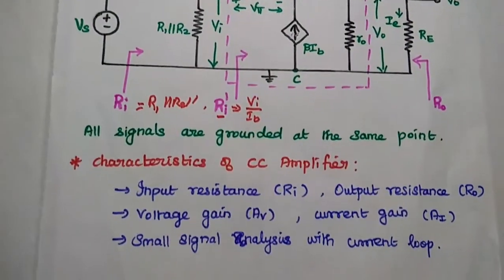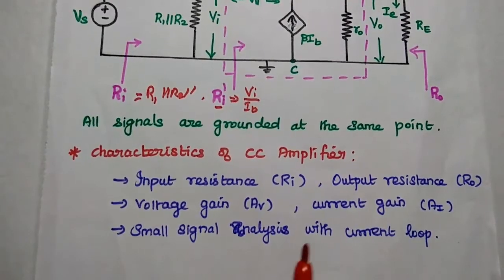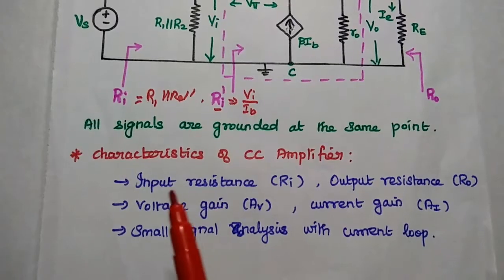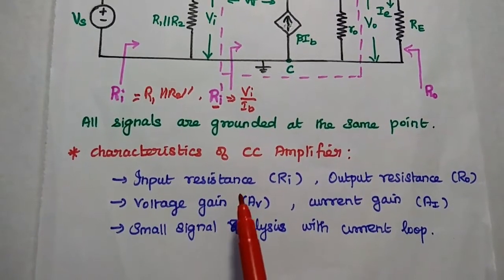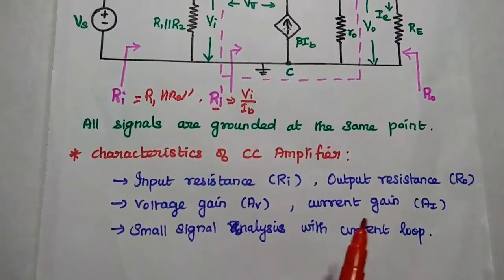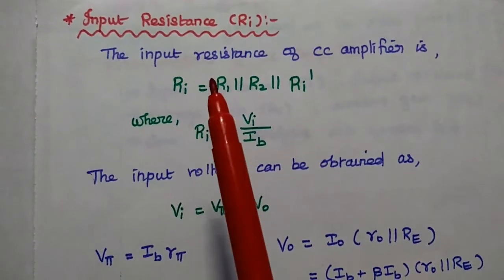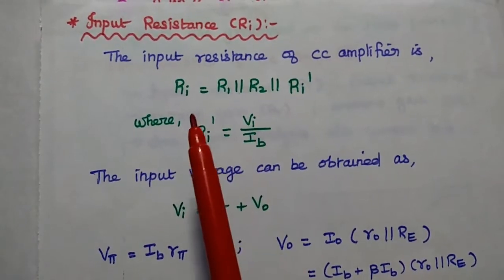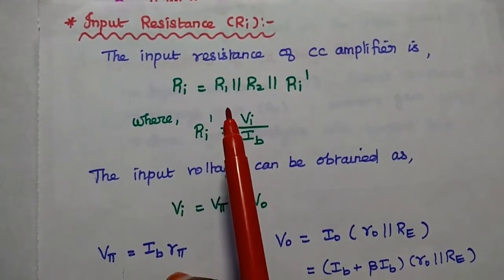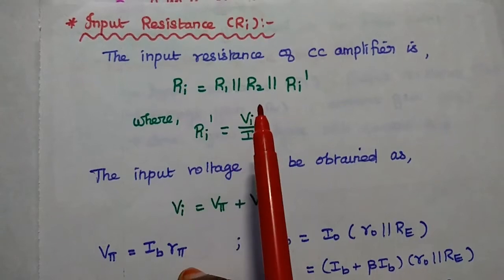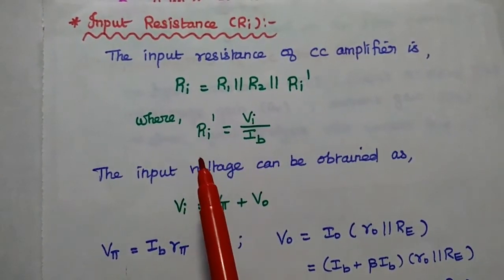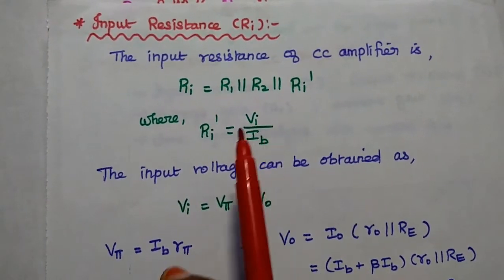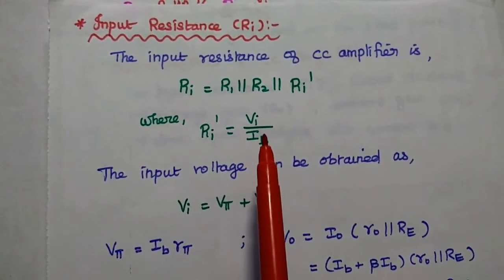We are going to analyze the characteristics of this CC amplifier using this small signal equivalent circuit. The characteristics are: input resistance, output resistance, voltage gain, and current gain. We begin with the input resistance of the CC amplifier. The overall input resistance is the parallel combination of R1, R2, and Ri dash. Ri dash is equal to Vi divided by Ib — we need to find the relation between these two.